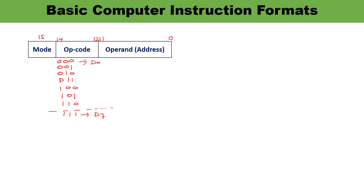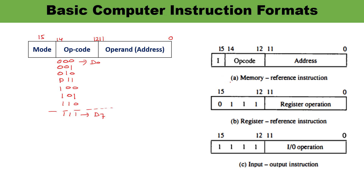To understand the types of instruction format: for the memory reference instruction, the opcode may have any value from D0 to D6, and the value of I may be 0 or 1 — when I is 0 it is direct addressing, otherwise indirect. For the register reference instruction, the opcode is D7 (111) but the mode bit I is 0. In the third case, the opcode is also D7 (111) but the mode bit I is 1, and this is known as the input-output instruction.